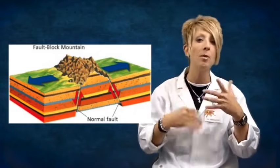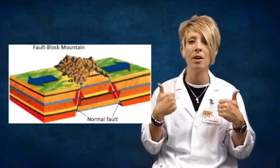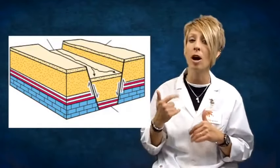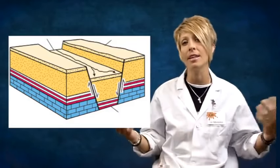As the hanging wall of each fault slips downward, the block in between then moves upward and it creates a mountain. Opposite of that, though, when a block of rock lying between slides downward, then we have a valley that forms.